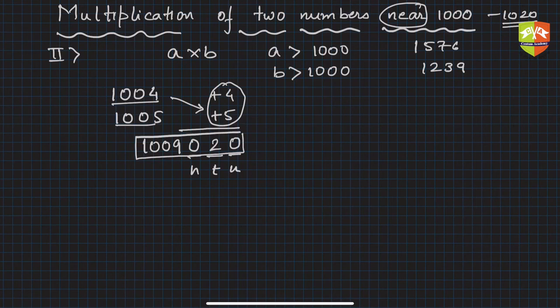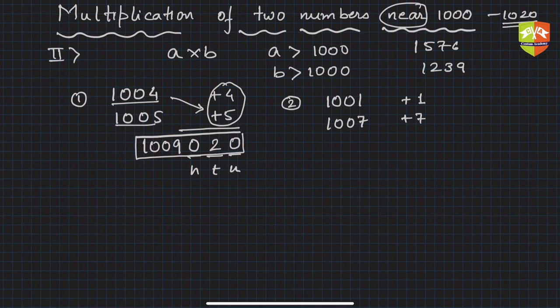Let's go ahead and take another example. This was example number one. Let's take example number two. Let's say we are multiplying 1001 with 1007. Again, how away from thousand? Plus one. How away from thousand? Plus seven. Since it is more than thousand, we are taking positives. You had seen in the previous session when it was less than thousand, we were taking negatives, right.